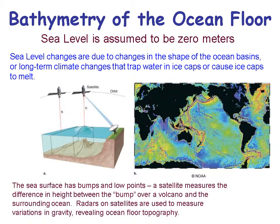Pretty cool! If we assume sea level is zero meters, we go from there to determine elevation above or below sea level. Sea level changes are due to changes in the shape of ocean basins or long-term climate changes that trap water in ice caps. You can see water piling up above a submarine mountain. Those bumps and low points on the ocean surface can be detected by satellite and confirmed with ship or submarine data, then fed into massive computers to finely map the ocean floor.